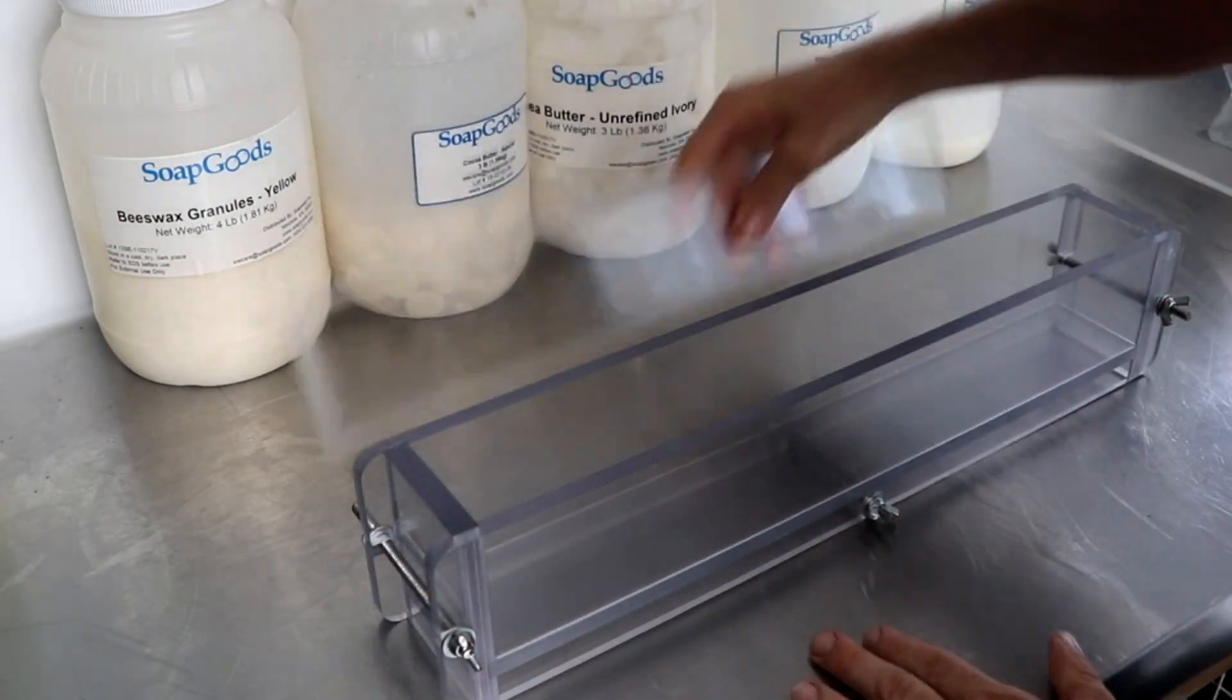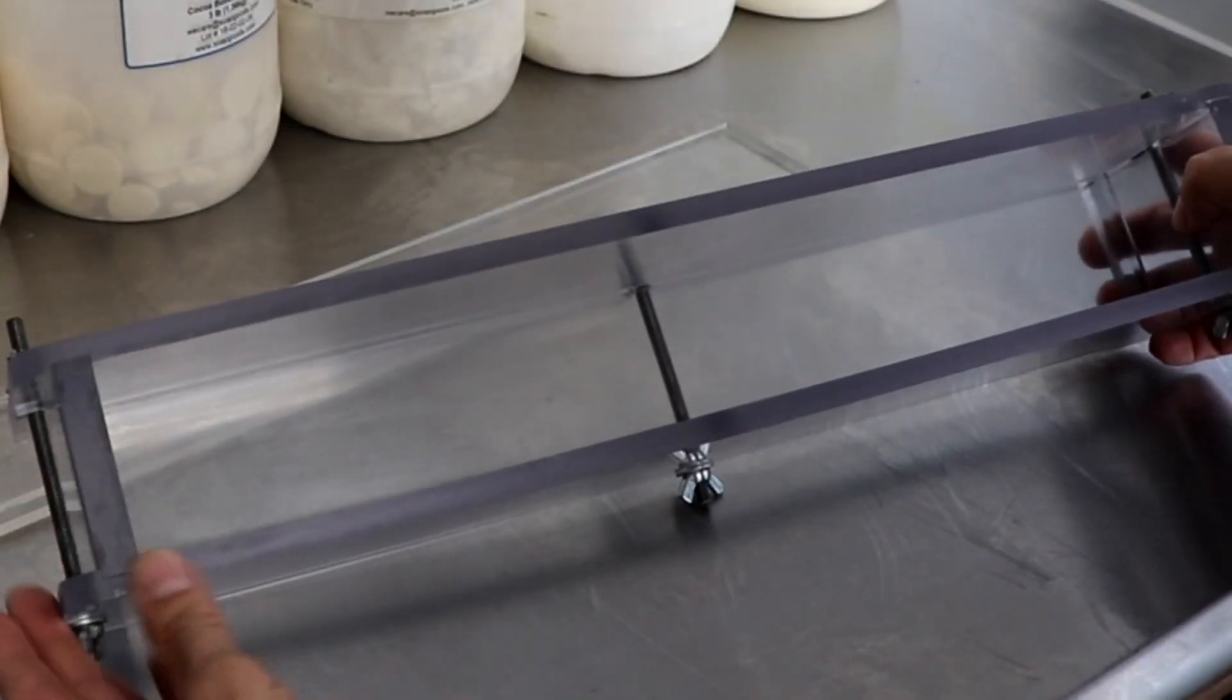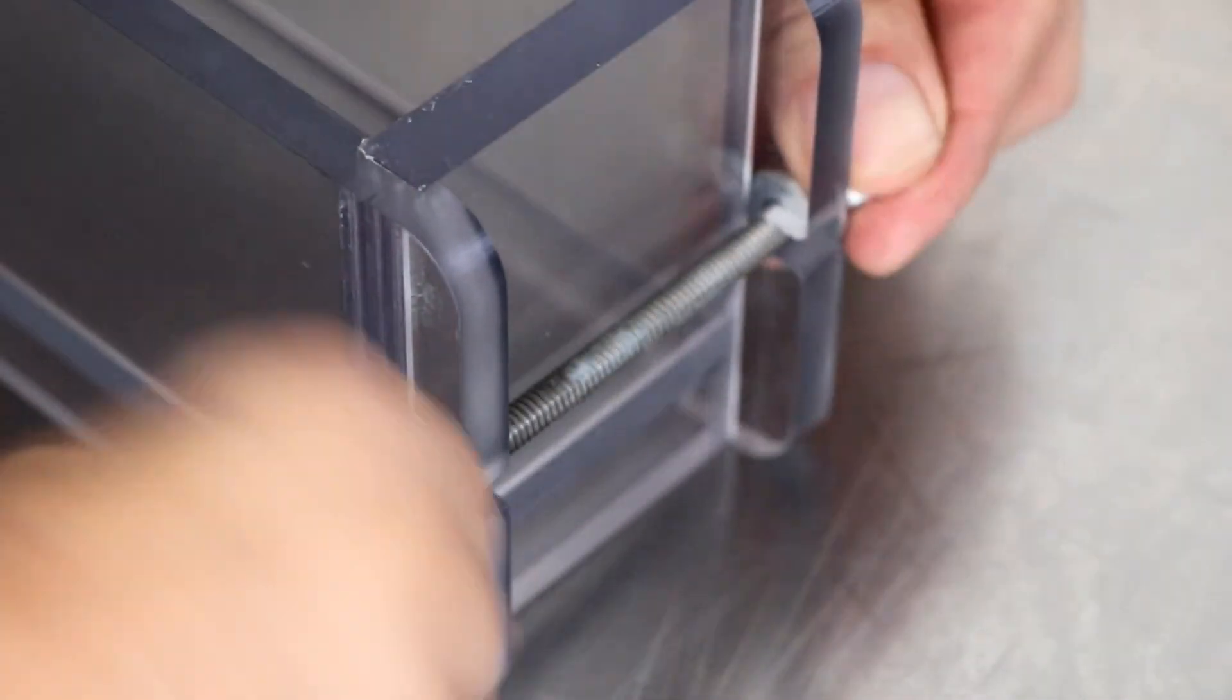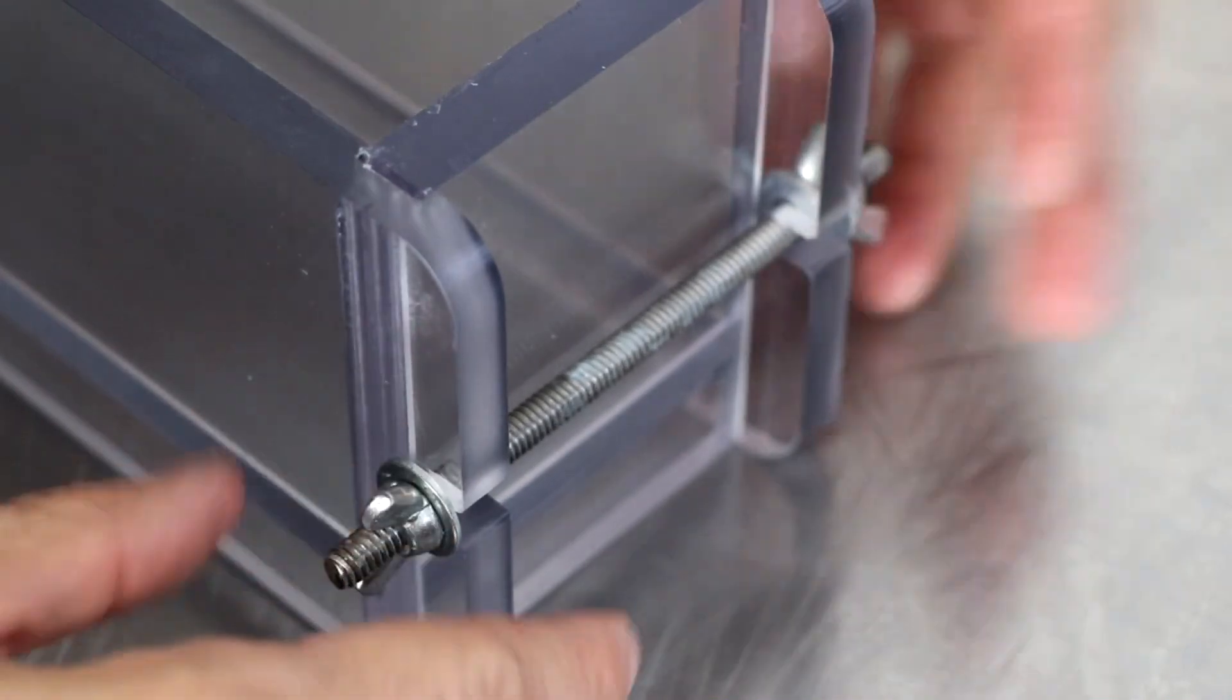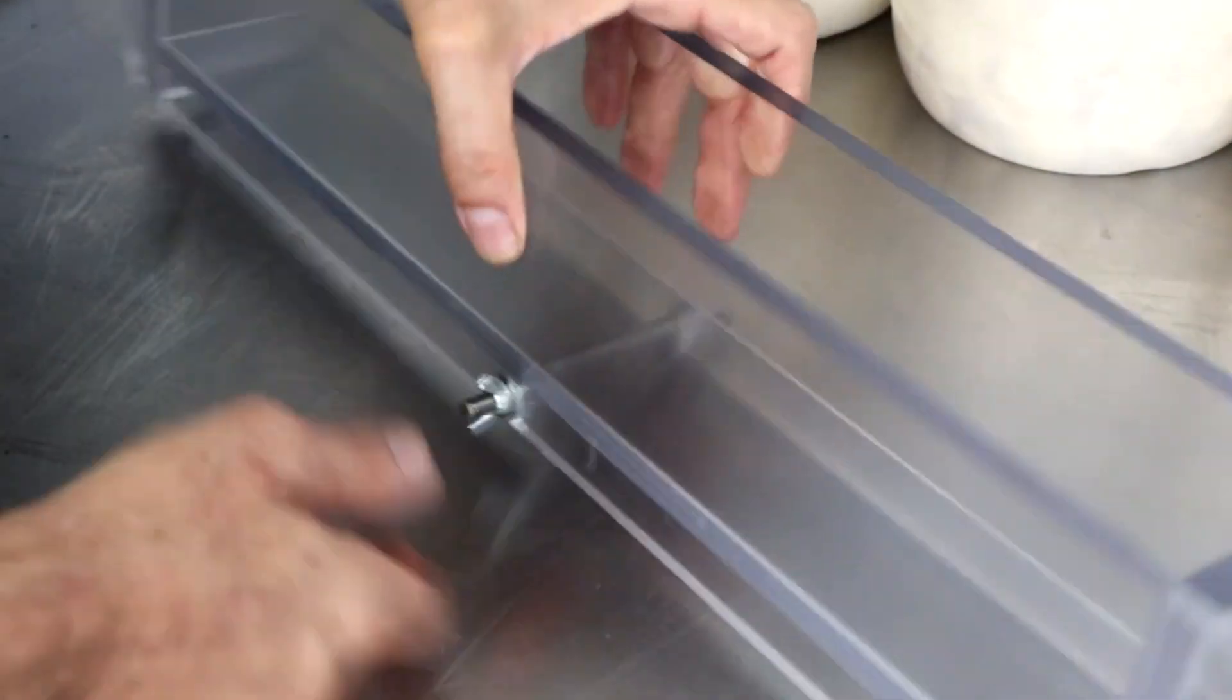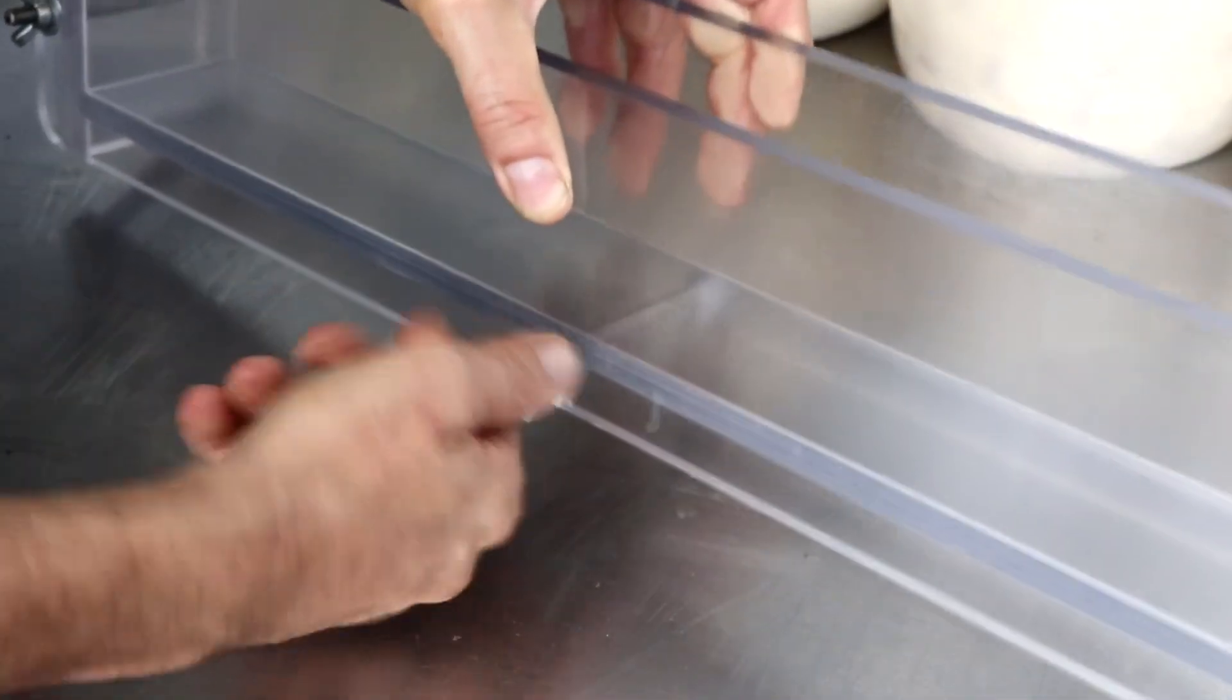So the first mold that we use is an 18 inch acrylic soap mold. This particular mold is really customizable. That's the cool thing about this Etsy store, Custom Craft Tools, is that you can pick the size, the dimensions that you want based off of the kind of soap that you want to make. A lot of people ask, is it hard to unmold your soap? And let me show you.